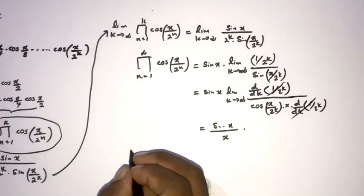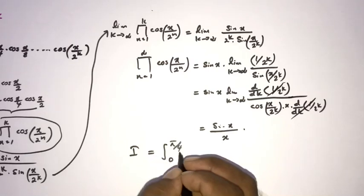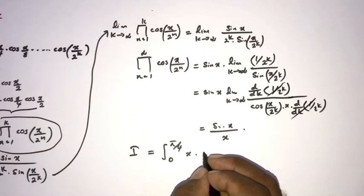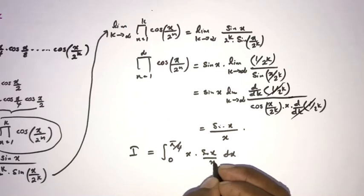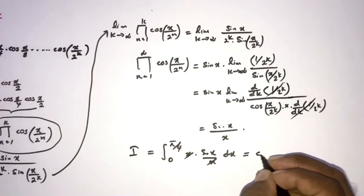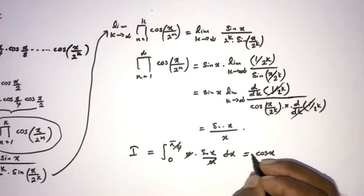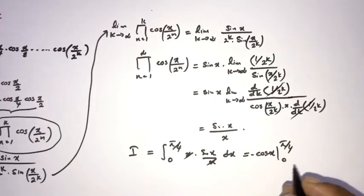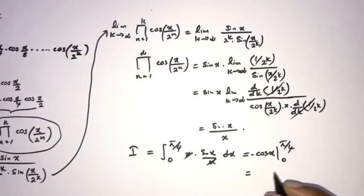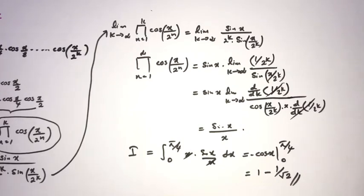So we can write I equals the integral from 0 to π/4 of x times sine of x over x dx. The x cancels, leaving the integral of sine of x, which equals negative cosine of x, evaluated from 0 to π/4. Applying the limits gives 1 minus 1 over √2. This is the answer. If you like this video, please subscribe to the channel. Thank you for watching.